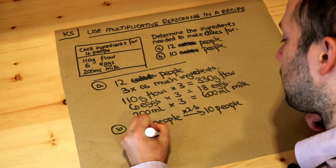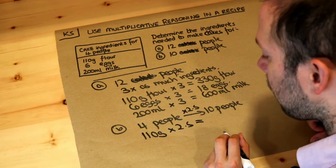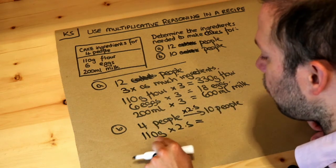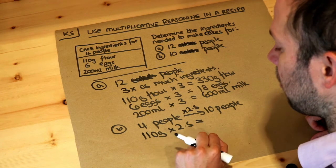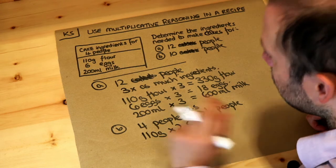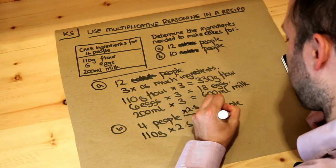So flour: 110 grams times by 2.5. We could do this on a calculator, but two lots of 110 is 220, and half a lot of 110 is 55. 220 plus 55 is 275 grams of flour.